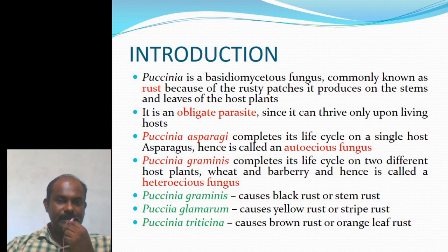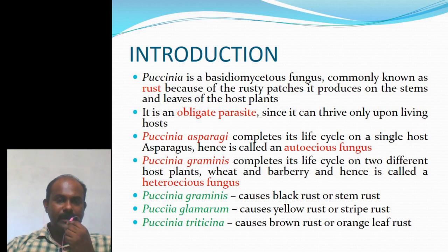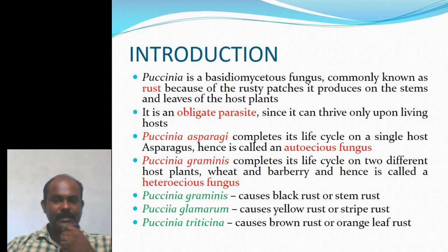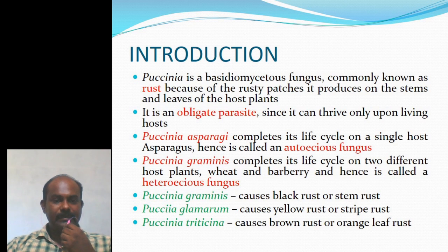Puccinia graminis completes its life cycle on two different host plants, namely Wheat and Barberry, and hence is called a heteroecious fungus. There are different species of Puccinia which cause different types of diseases: Puccinia graminis causes black rust or stem rust, Puccinia glumarum causes yellow rust or stripe rust, and Puccinia recondita causes brown rust or orange leaf rust.